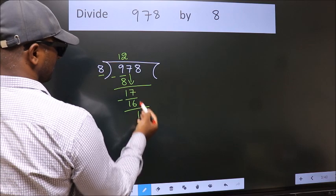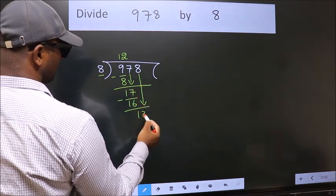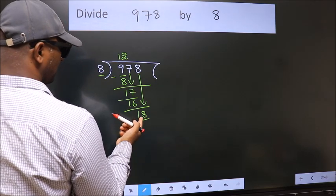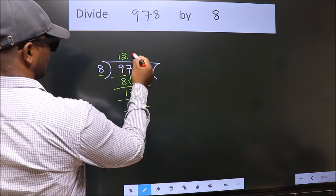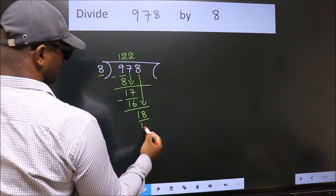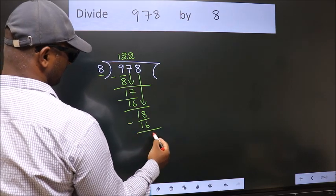After this, bring down the next number. So 8 down. So 18. A number close to 18 in the 8 table is 8 times 2 equals 16. Now we subtract. We get 2.